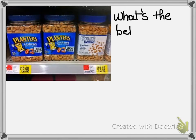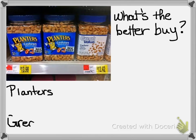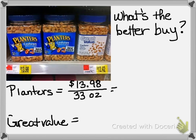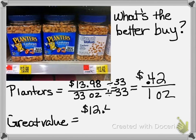Let's look at the Walmart example. I want to know what the better buy is — Planters or Great Value cashews. The Planters are $13.98 for the whole container and there are 33 ounces in that container. I want to find the price per ounce, so I take $13.98 and divide top and bottom by 33. That gives me a unit rate of about $0.42 per ounce.